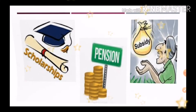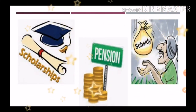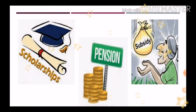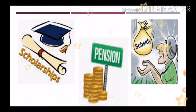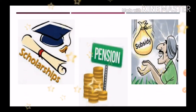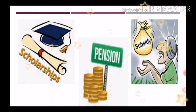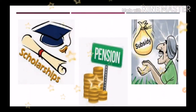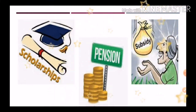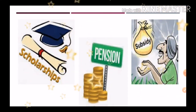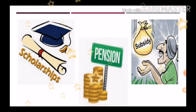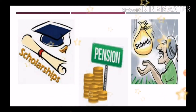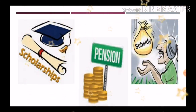आजकल government corruption को remove करने के लिए scholarship, pension, और subsidies के पैसे directly आपके bank account में transfer करती है, ताकि बीच में corruption की possibility खत्म हो जाए। जैसे आपकी scholarship या uniform के पैसे direct bank account में आते हैं — पहले वो cash में दिये जाते थे, इसलिए यह step उठाया गया।